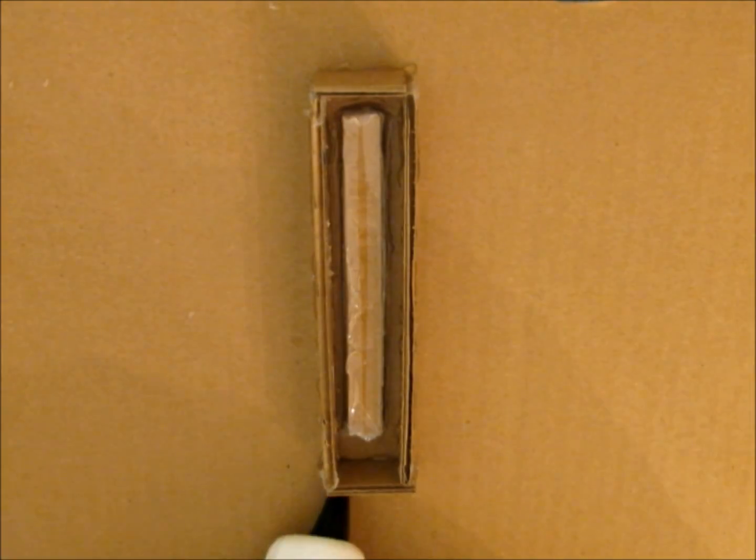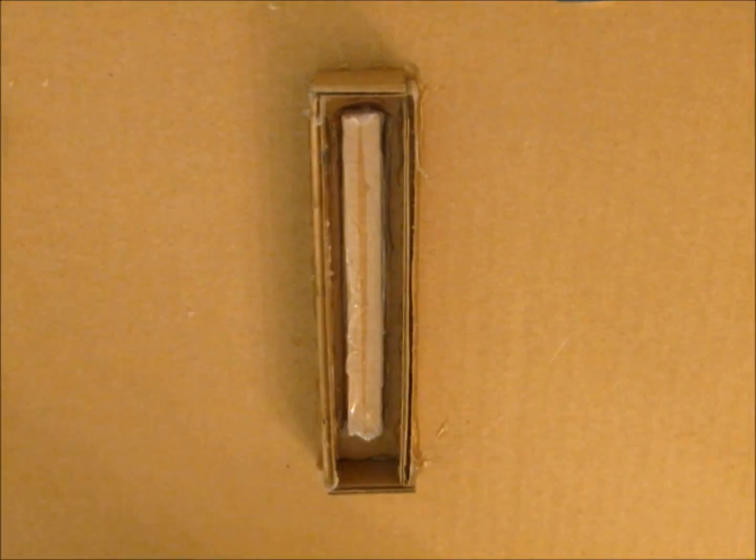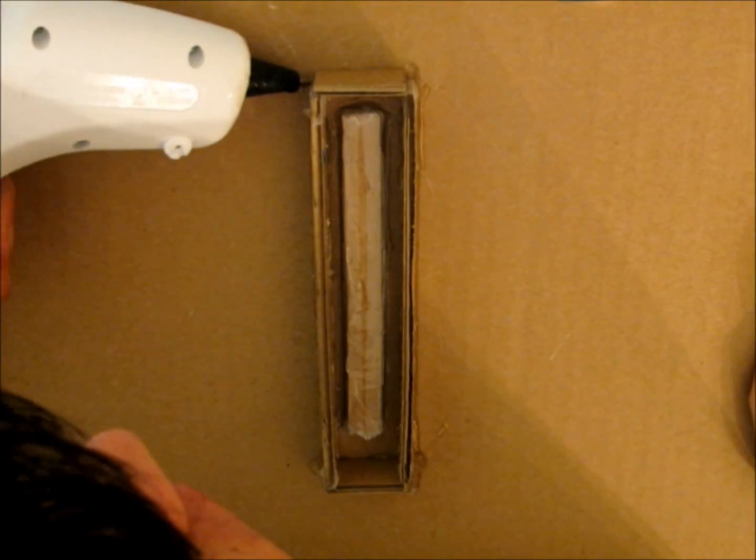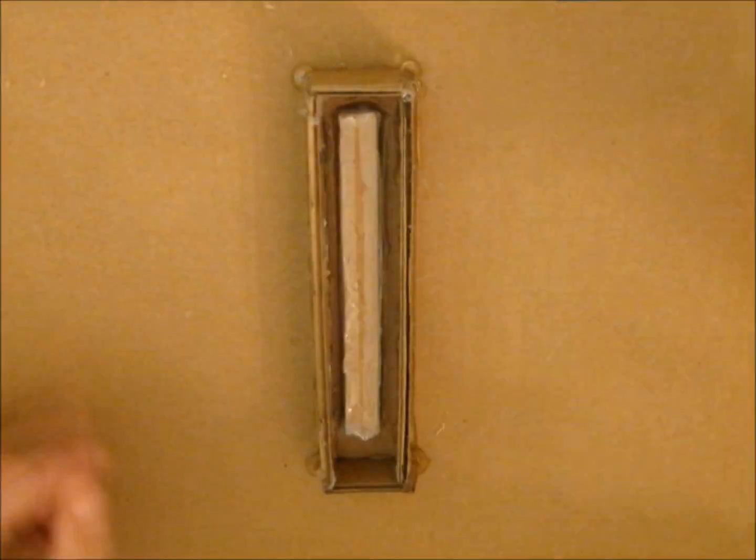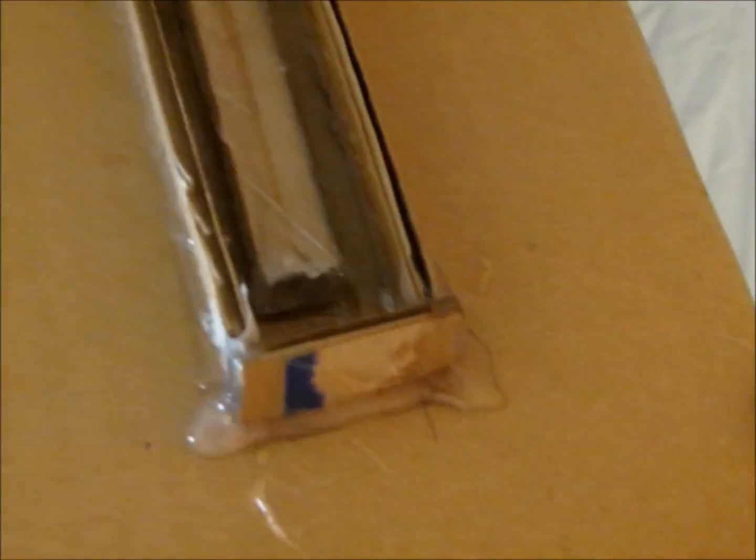To prevent the mold from leaking, seal all joints with hot glue. I usually do this twice just to be safe. This is what the mold looks like after it has been sealed. As you can see, all the joints are covered in thick layers of hot glue.